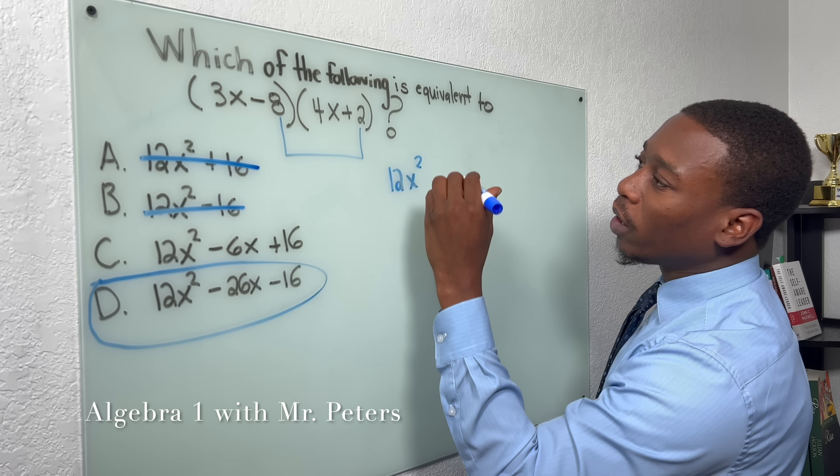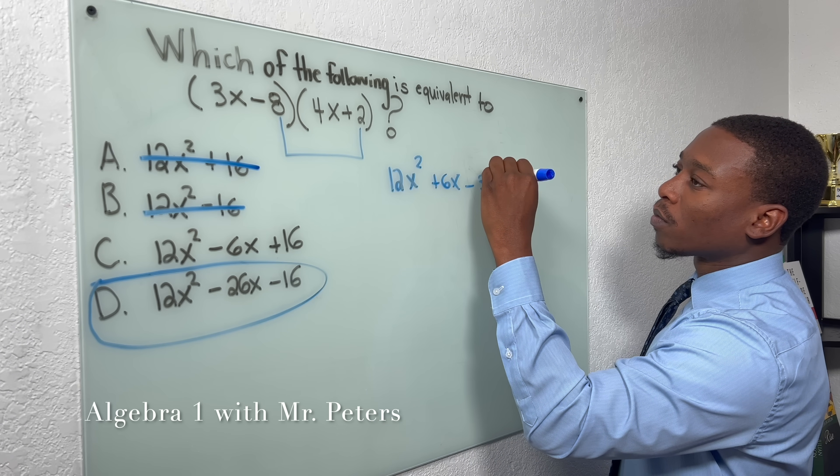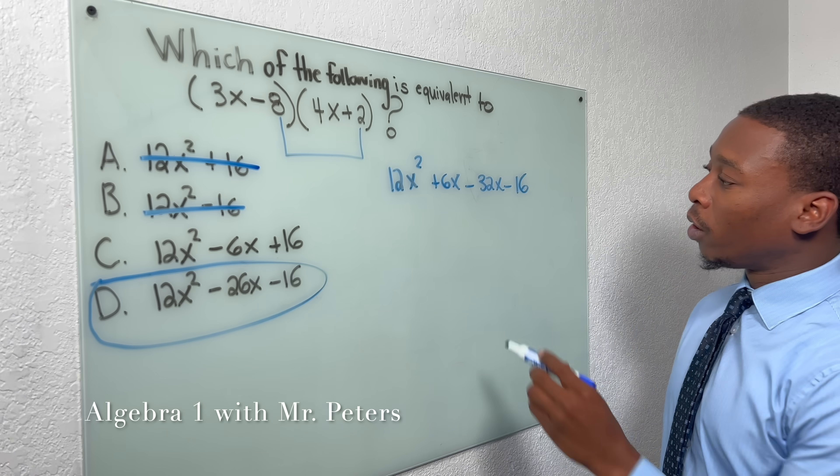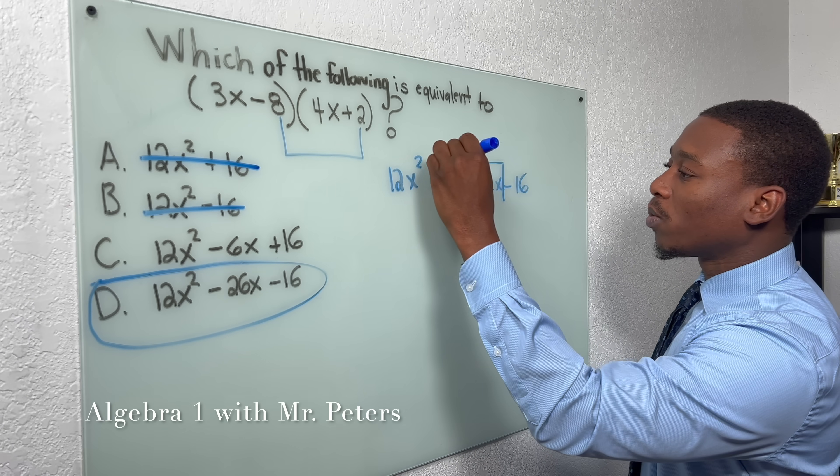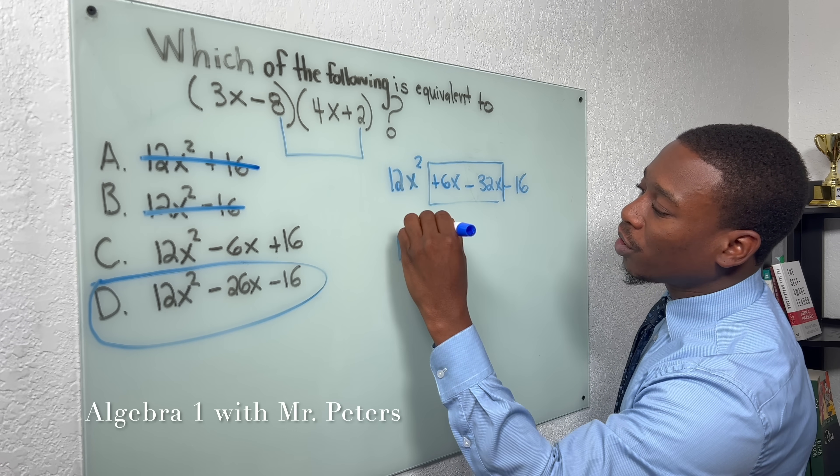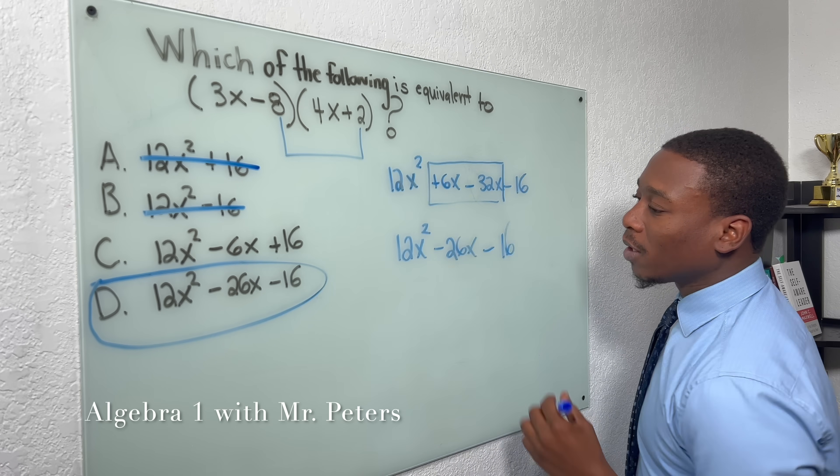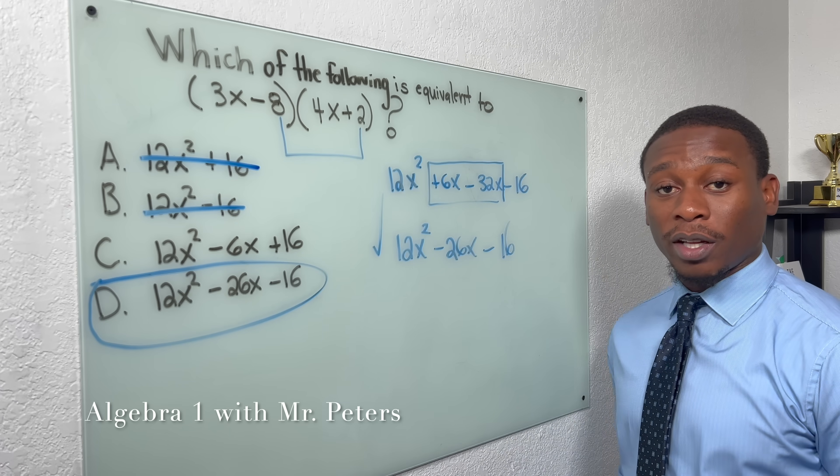So once we do, we'll get 12x... This is what we're going to get. We clean up these two terms in the middle because they're like terms, and we should have 12x² - 26x - 16 as our final answer.